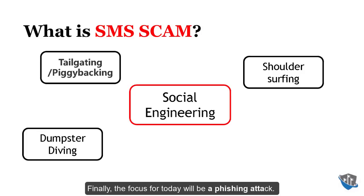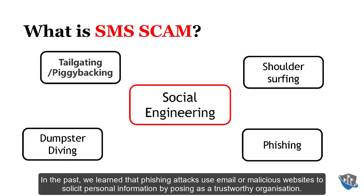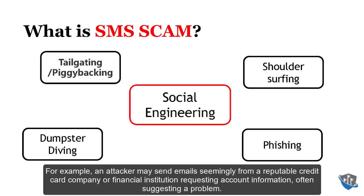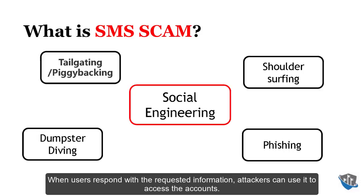Finally, the focus for today will be phishing attacks. Phishing attacks use email or malicious websites to solicit personal information by posing as a trusted organization. For example, an attacker may send emails seemingly from a reputable credit card company or financial institution requesting account information, often suggesting there is a problem. When users respond with the requested information, attackers can use it to access the accounts.